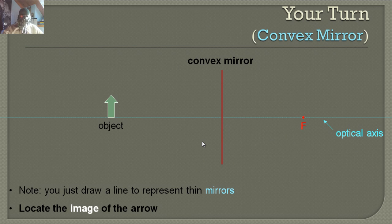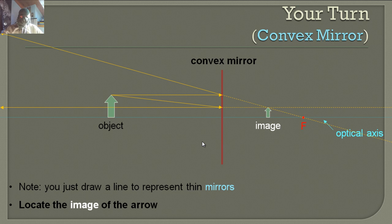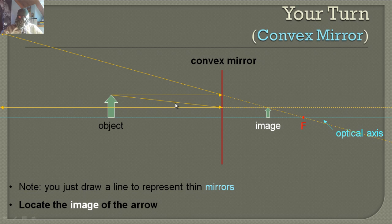Now it's your turn — hit pause and draw where the image is going to be formed. For the solution: the first line is drawn parallel to the optical axis, hits the mirror, bounces off, and this line goes through the focal point. The second line heads directly towards the focal point and is reflected parallel to the optical axis. Continuing this line, it crosses the first line — and there's the image.